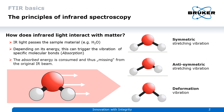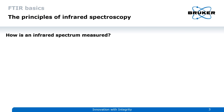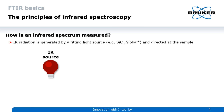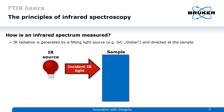The energy absorbed by the molecule is consumed and is therefore missing from the original IR beam. But how can we use this principle to our advantage and investigate this interaction? First, we need infrared light from a fitting source. The light is then directed at the sample.